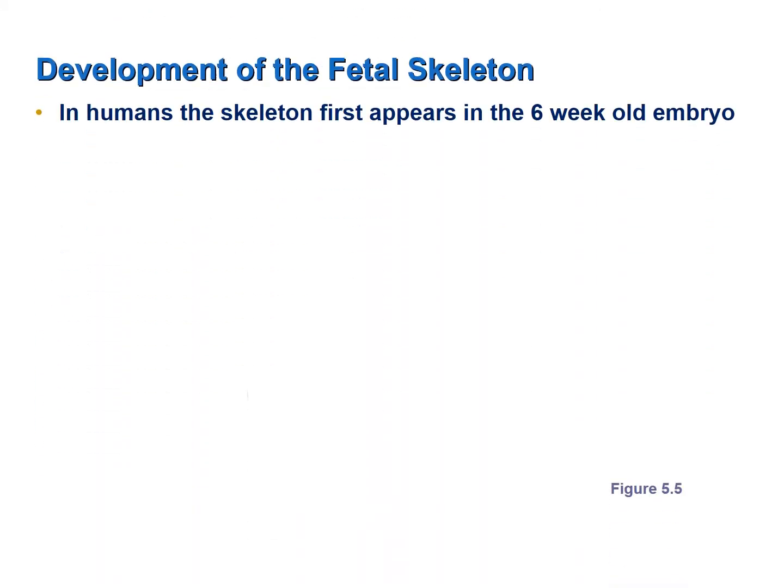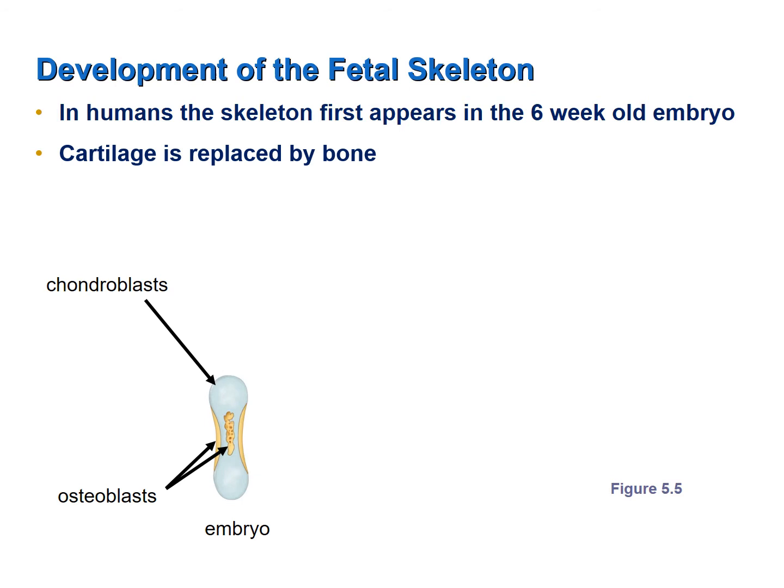The human skeleton first appears at about six weeks of gestation — approximately six weeks after fertilization. The long bones of the skeleton are composed exclusively of cartilage at that point, cartilage that has been formed by chondroblasts, the cartilage-forming cells.